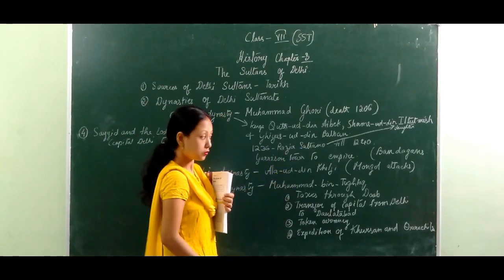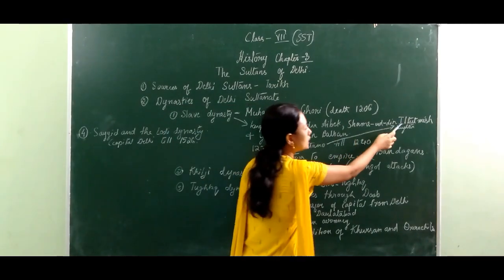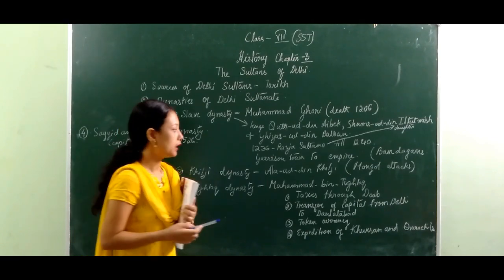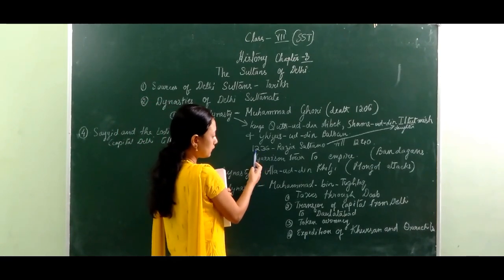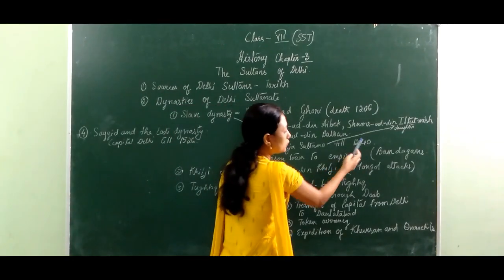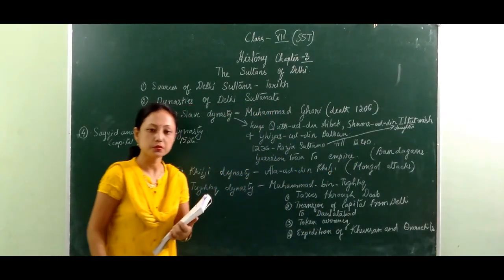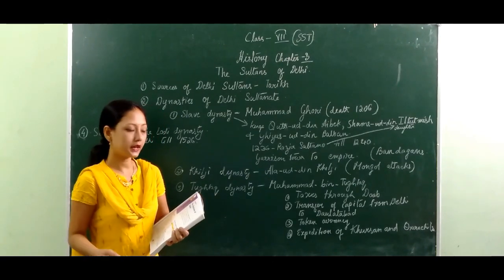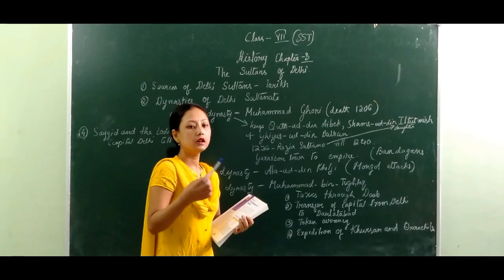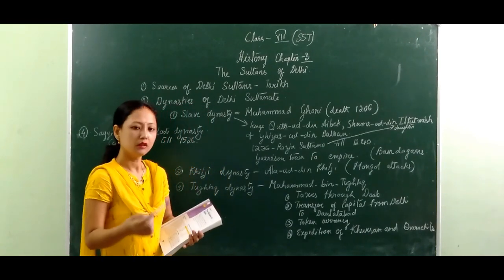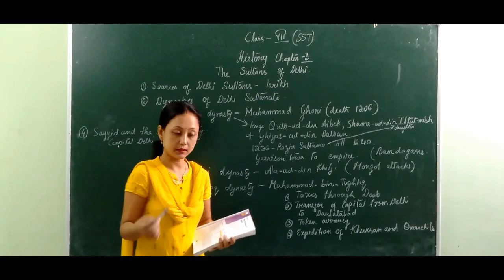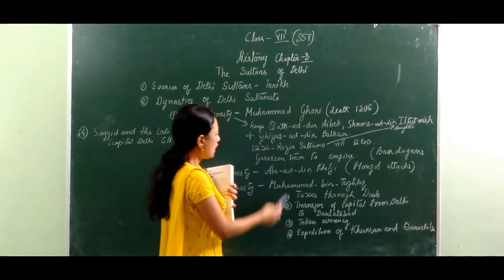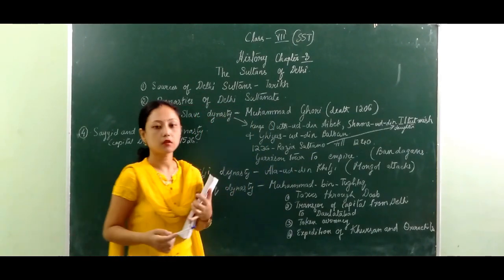Among them, we find Razia Sultan, who was the daughter of Iltutmish. She tried to rule over the Delhi Sultanate for a period from 1236 to 1240, but she was unable to rule Delhi for a long period of time because she was not liked by many nobles or ministers, so she had to resign in 1240.